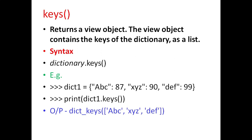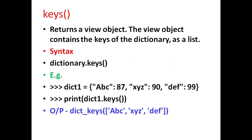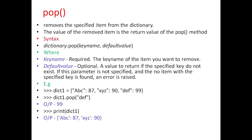Next is keys, which returns a view object. The view object contains the keys of the dictionary as a list. The general syntax is dictionary.keys. For example, if dictionary dict1 is defined with these keys and values and when we give the command print dict1.keys, it will display all the keys from the dictionary.